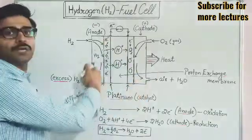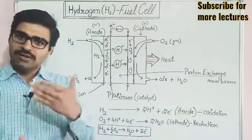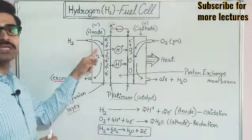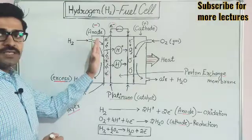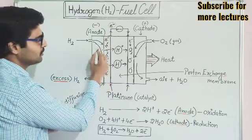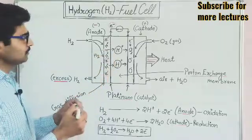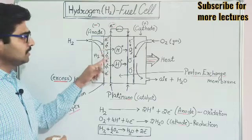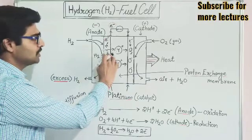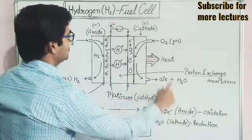Now let's understand how the hydrogen fuel cell works. First, from the inlet, hydrogen enters the chamber. After this, hydrogen diffuses through the gas diffusion layer — it passes from one part to the next. Then, the hydrogen gets dissociated.